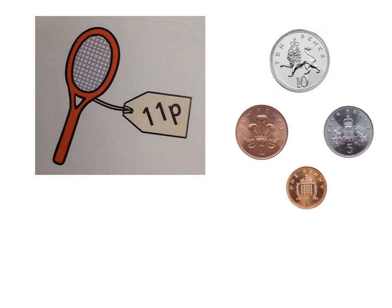If we want to buy something that costs 11 pence, we don't have an 11 pence coin, so we need to use the coins that we have to make 11 pence.